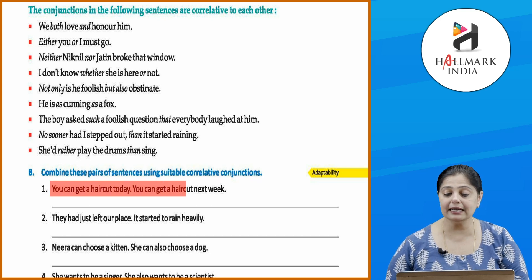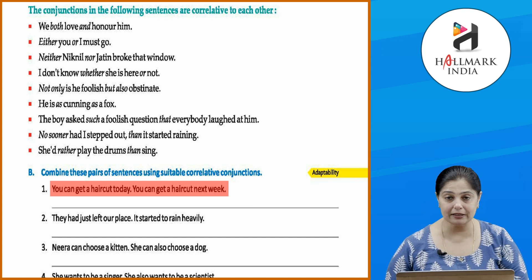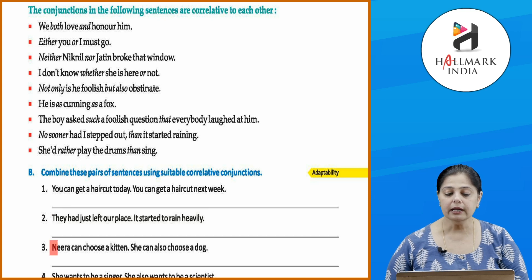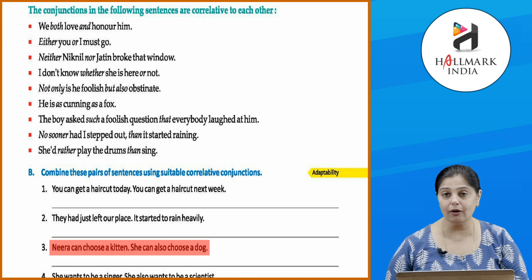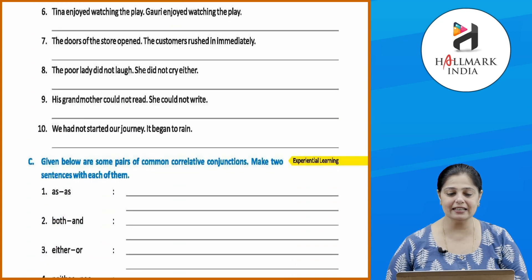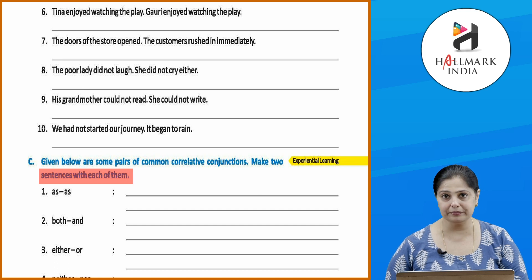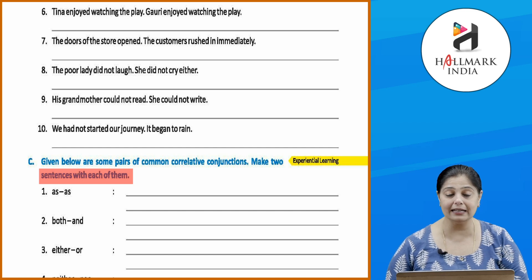Now let's combine pairs of sentences using suitable co-relative conjunctions. 'You can get a haircut today. You can get a haircut next week.' → 'You can either get a haircut today or next week.' 'They had just left our place. It started to rain heavily.' → 'No sooner had they left our place than it started raining.' 'Neera can choose a kitten or a dog.' → 'Neera can either choose a kitten or a dog.' Do the rest by yourself.